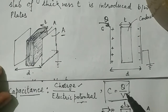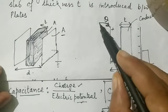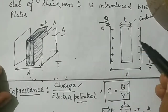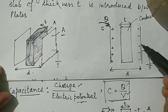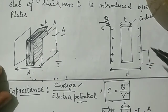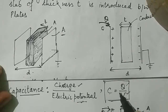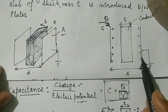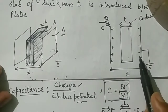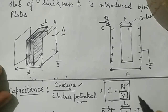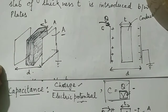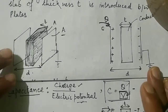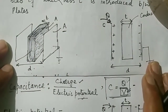If we give a charge Q to the plate, a potential difference is developed between the two plates. So if we are able to find out the potential difference between the two plates from the negative plate to the positive plate, then we can find out the capacitance. The main problem is to find out the electric potential.